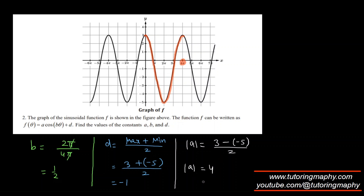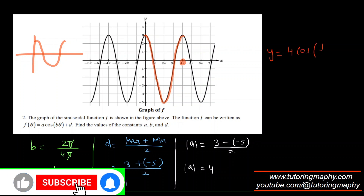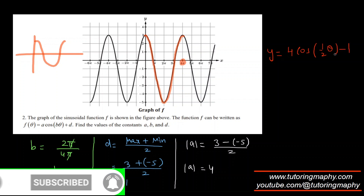A is plus or minus 4. Looking at the parent cosine function — it starts from the top, goes down, then up. This graph is also going down then up, so A is a positive number. The final answer is 4 cos(½θ) − 1.